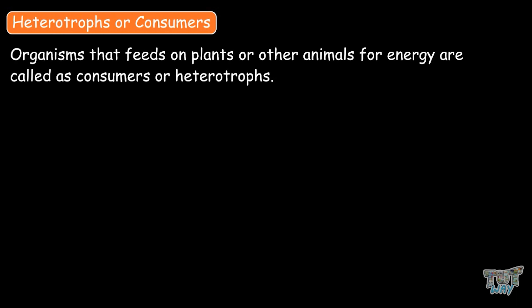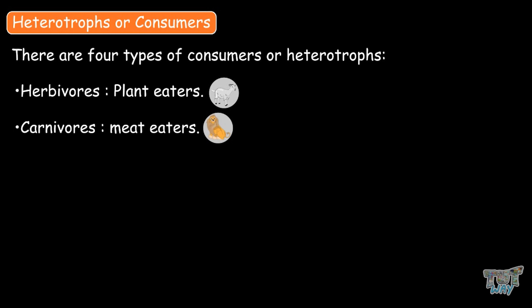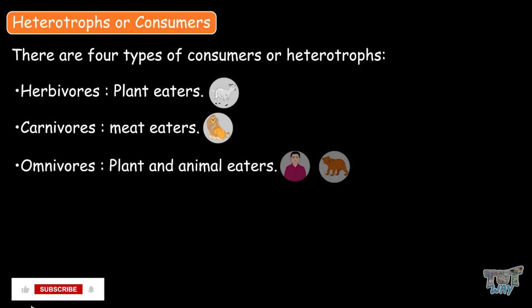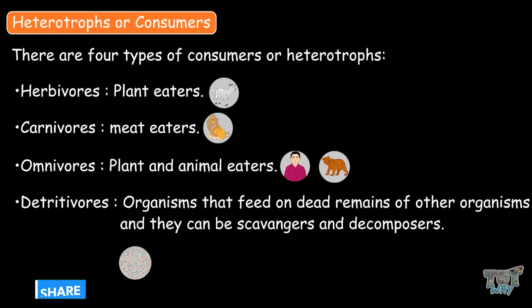Now let's learn about heterotrophs, or consumers. Organisms that feed on plants or other animals for energy are called consumers or heterotrophs. There are four types: herbivores, that is plant eaters; carnivores, as in meat eaters; omnivores, that eat both plants as well as flesh; and detritivores, which are organisms that feed on the dead remains of other organisms. Detritivores can be of two types: scavengers or decomposers.